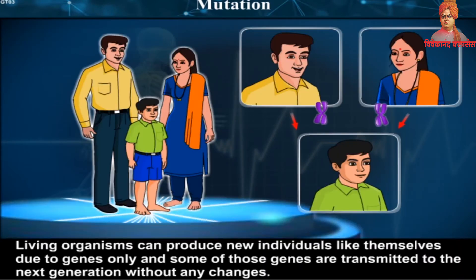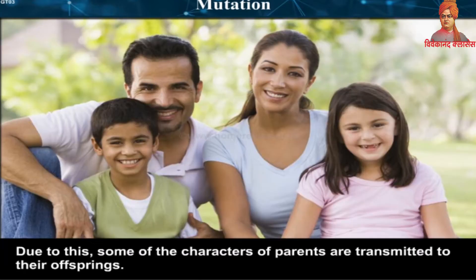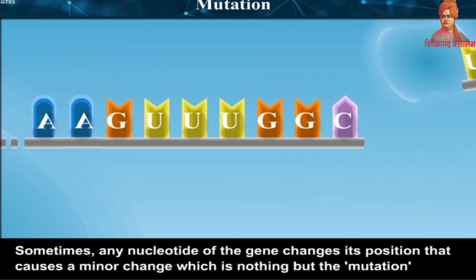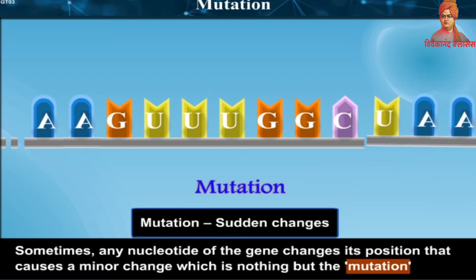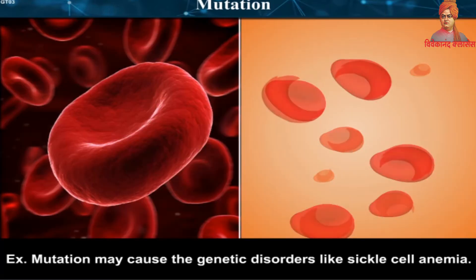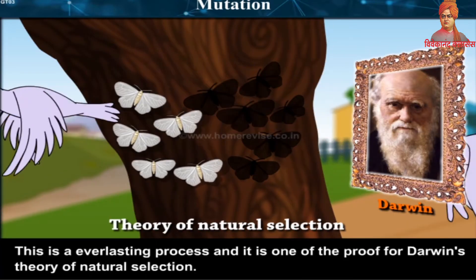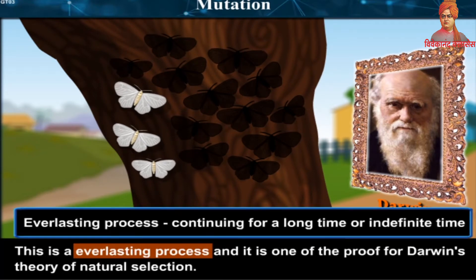Living organisms can produce new individuals like themselves due to genes only, and some of those genes are transmitted to the next generation without any changes. However, sometimes sudden changes occur in those genes — sometimes any nucleotide of the gene changes its position, causing a minor change, which is called a mutation. Some mutations may be minor, but some may be considerable. For example, mutation may cause genetic disorders like sickle cell anemia. This is an everlasting process and is one of the proofs for Darwin's theory of natural selection.